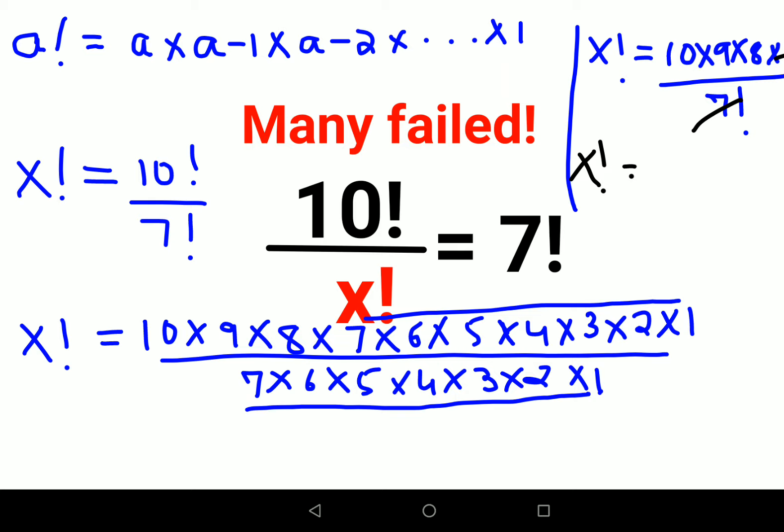Now what you're left with is x factorial and this is what we're left with: 10 into 9 into 8. So now, in this kind of scenario, your x also has a factorial sign ahead, so you need to expand 10 times 9 times 8 in such a way that you get a factorial value. Let's understand how we do that.